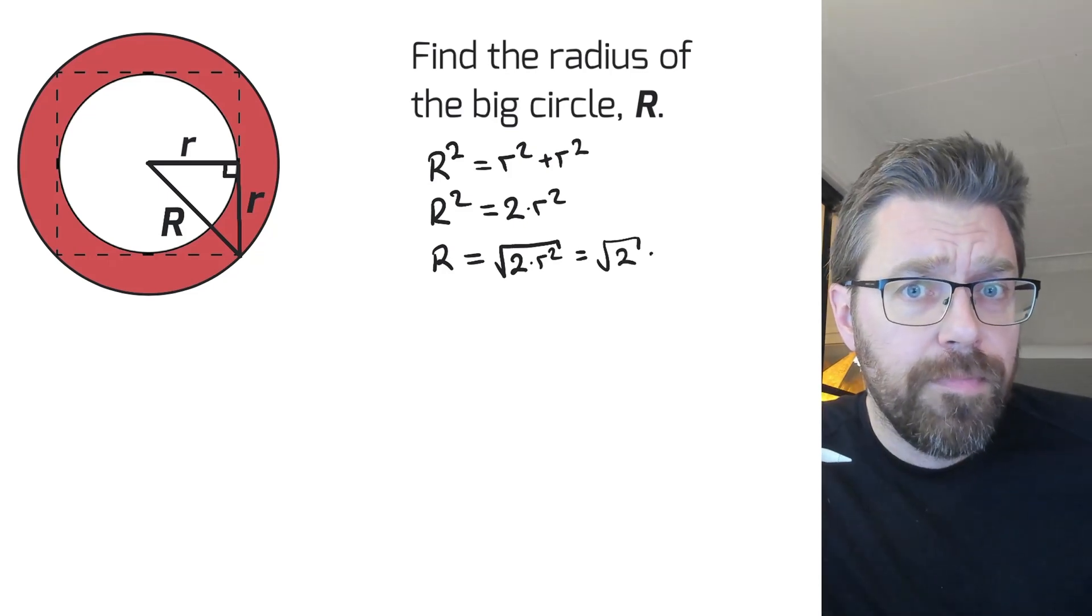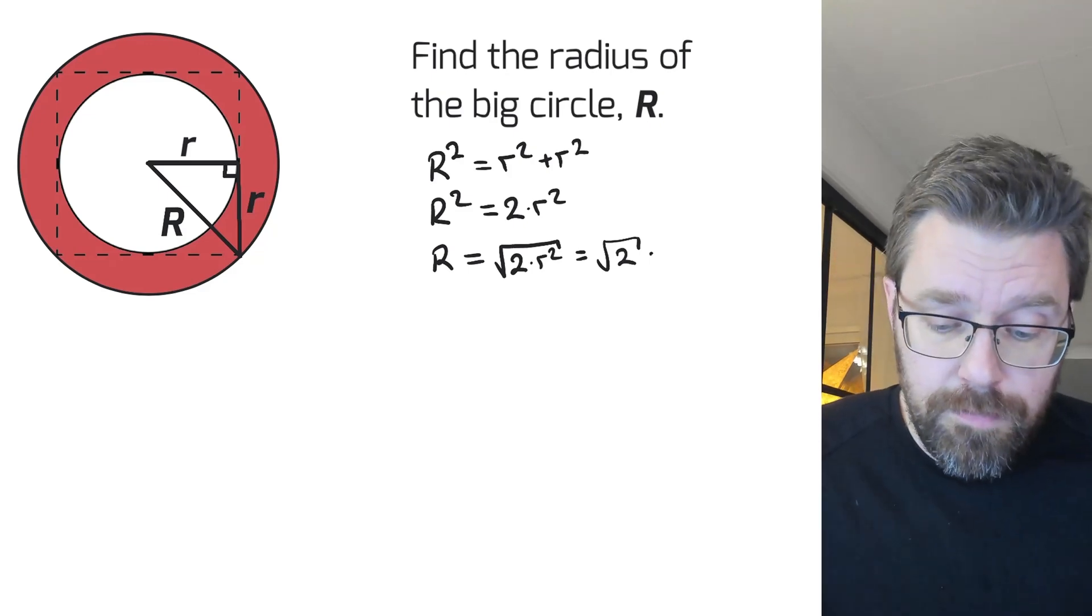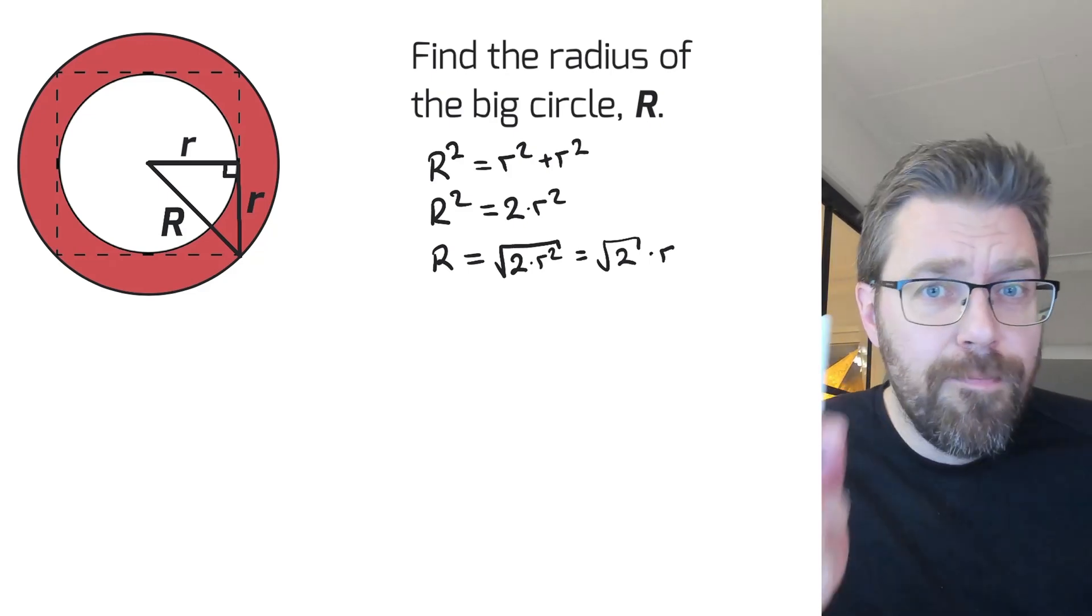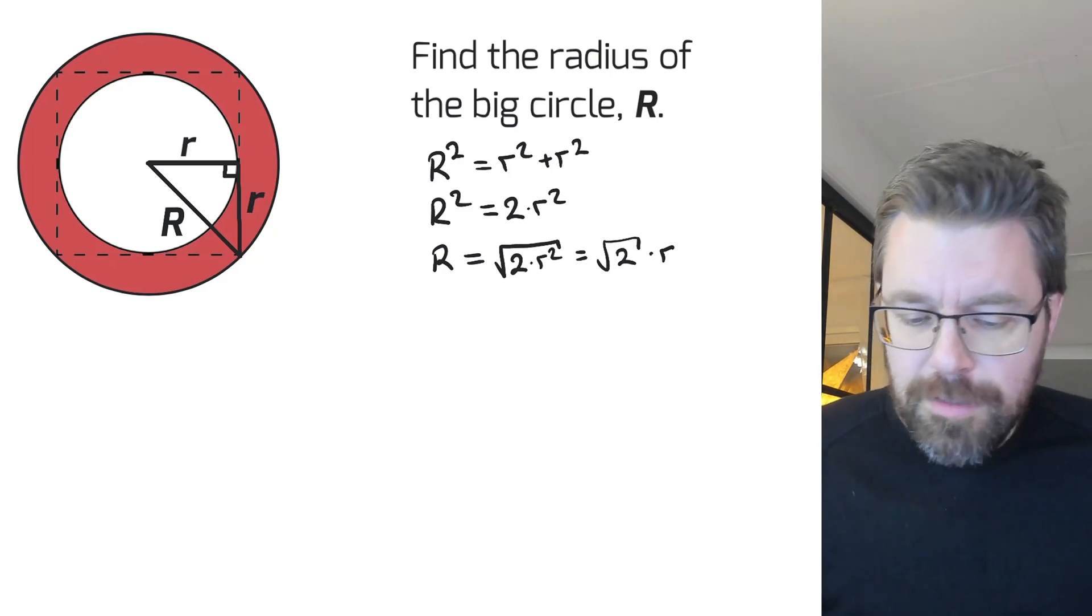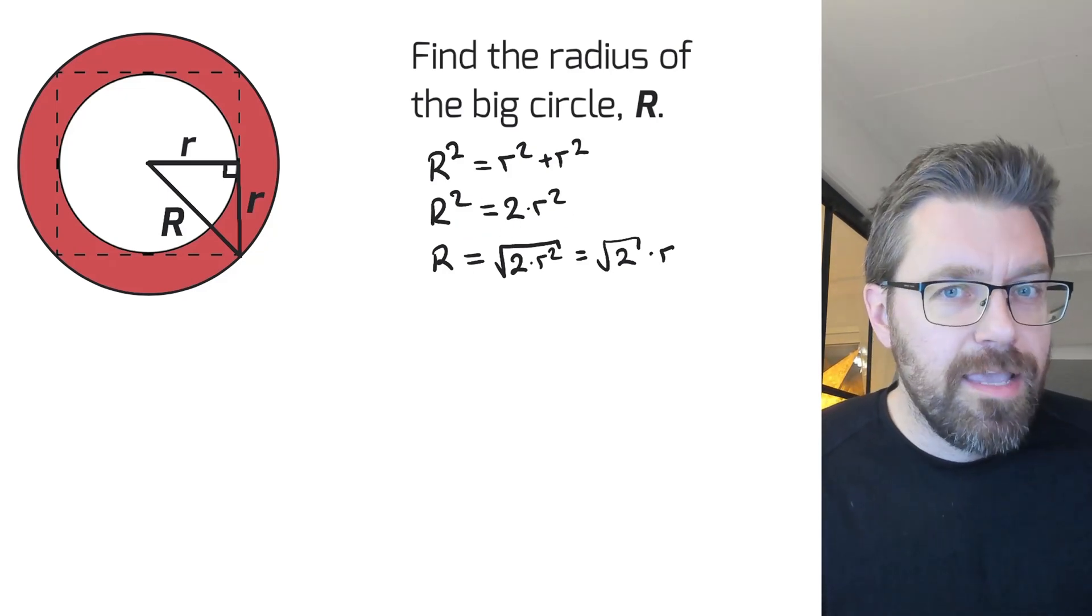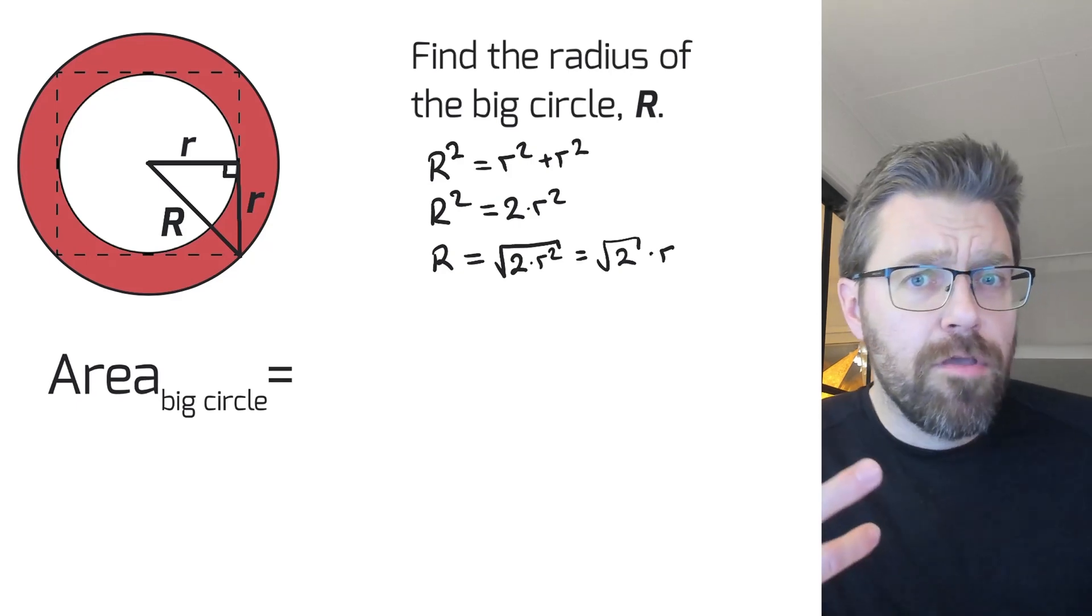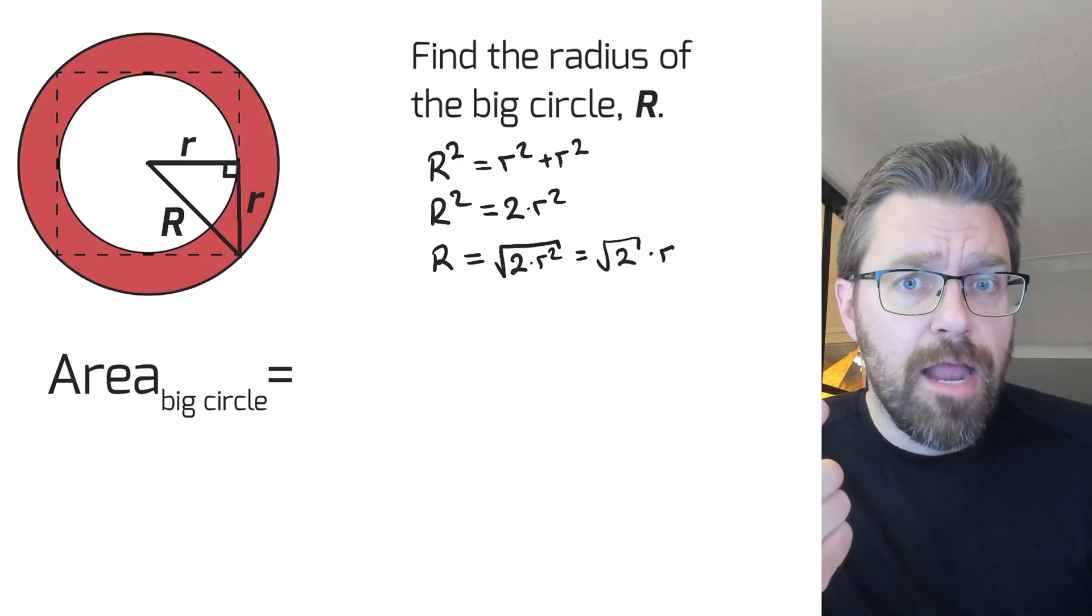So this, but you don't need this last bit, you can do it with only this row I think. The area of the big circle, area of a circle is radius times r, is radius times itself and times pi.